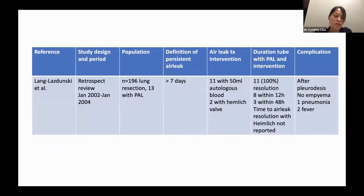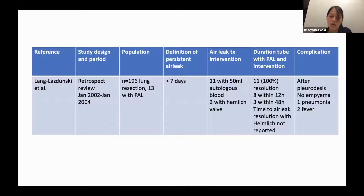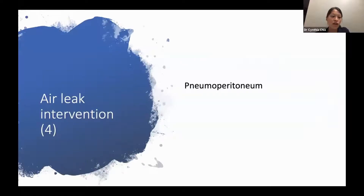A retrospective review from 2002 to January 2004 included 196 patients who underwent lung resection; 13 had air leak, defined as more than seven days. Eleven had pleurodesis with autologous blood and two with Heimlich valve. All 11 had complete resolution — eight within 12 hours and three within 48 hours. No empyema occurred after pleurodesis, though one patient developed pneumonia and two developed fever. Based on these three papers, if Heimlich valve over 14 days doesn't work, pleurodesis is a reasonable consideration, with empyema being the main potential complication.